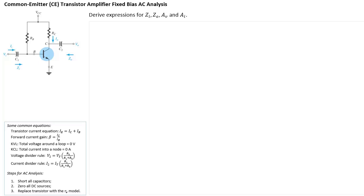In this video, I'm going to show you how to do an AC analysis on a CE transistor amplifier. We're going to derive some expressions for ZI, ZO, AV, and AI. ZI means input impedance as seen by VI, ZO is the output impedance as seen by VO, AV is the voltage gain, and AI is the current gain.